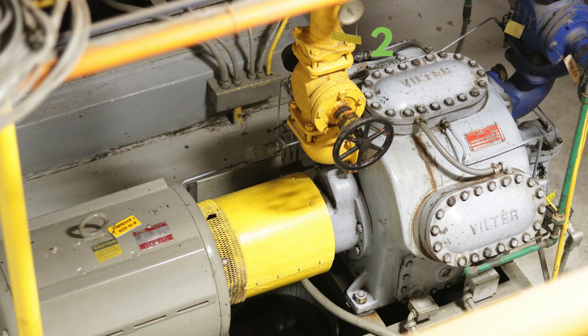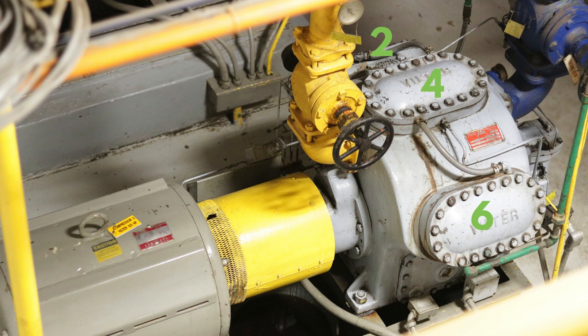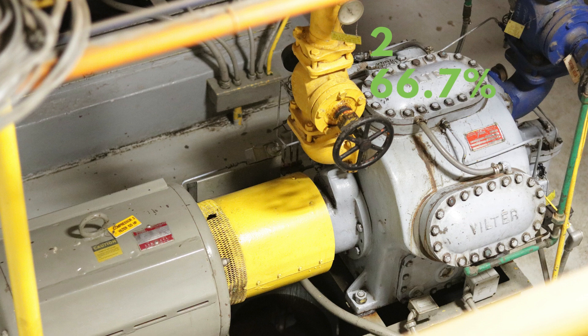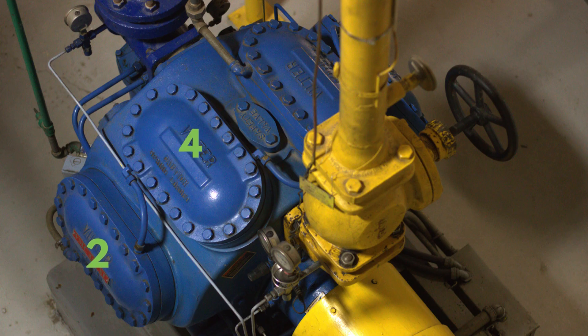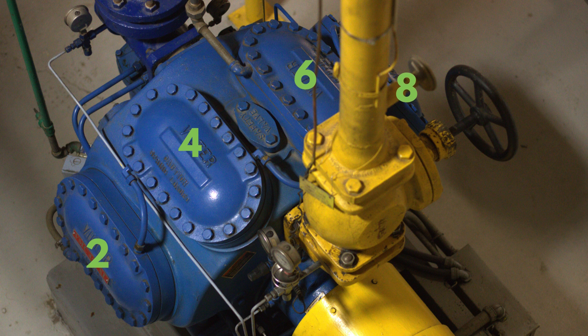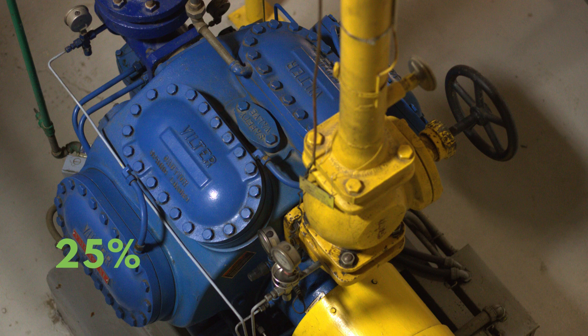Unloading in reciprocating compressors typically occurs in two-cylinder increments. For example, a six-cylinder compressor could unload down to four or two cylinders corresponding to 66.7% or 33.3% capacity. An eight-cylinder compressor could unload down to six, four, or two cylinders or 75%, 50%, or 25% capacity.